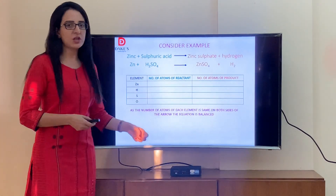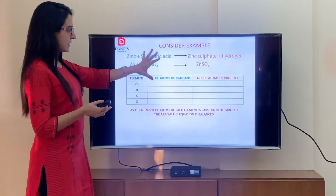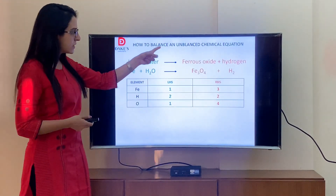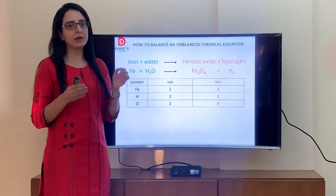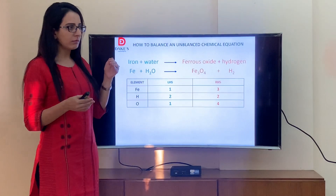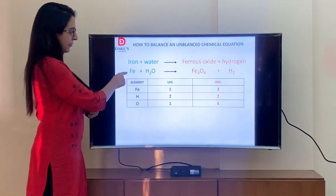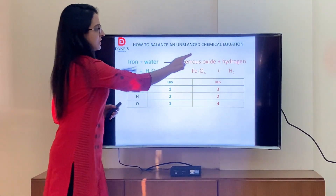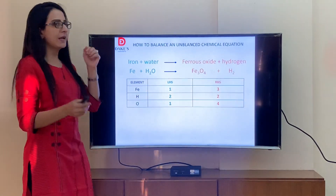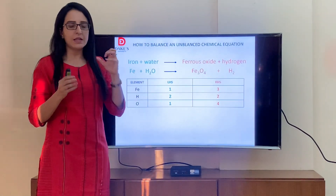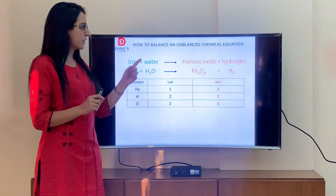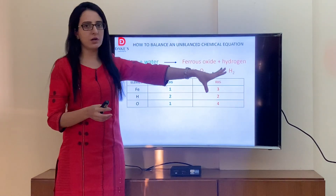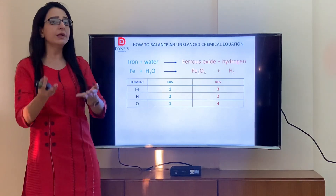This is the example I had given you for revision — this is a balanced reaction. But today we are going to learn how to balance an unbalanced chemical equation. Before I go to this topic, the first thing you need to remember is: for the reaction iron plus water gives ferrous oxide plus hydrogen, can I change the reactants and the products? The answer is no. The reactants and the products always remain the same. What you need to change are the numbers.